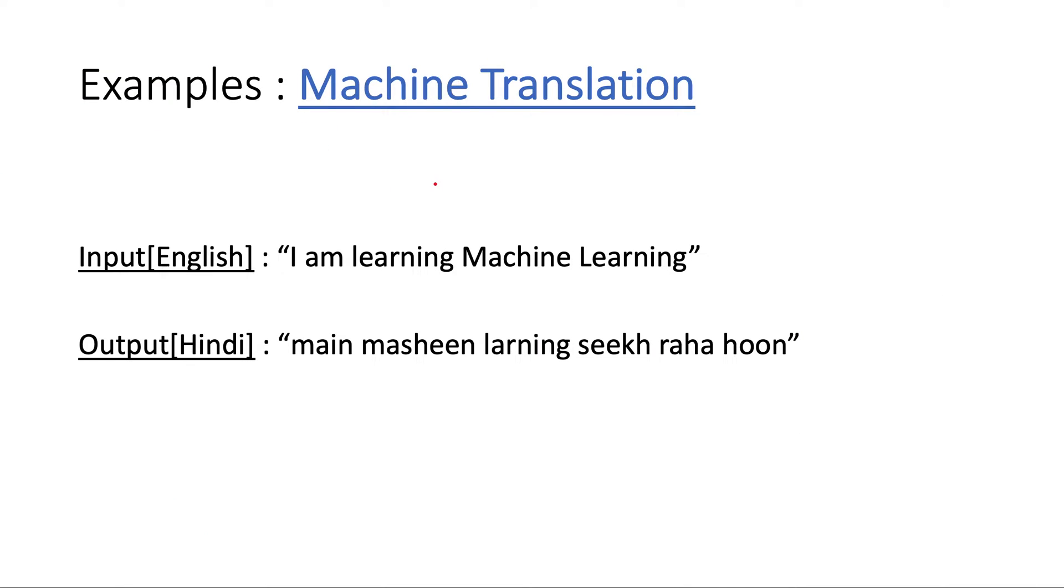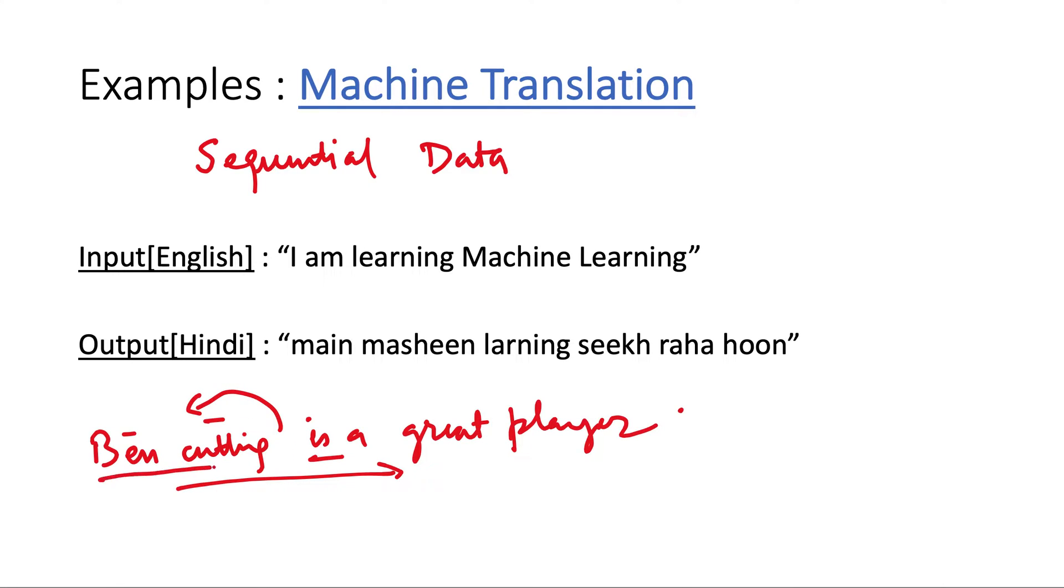Now let's see some motivating examples where it is used. It is very useful when we have sequential data, where there is some notion of sequence among the data. Like when we are speaking one sentence, the different words in a sentence are related. When we say 'Ben Cutting is a great player,' there is a flow, there is a grammar associated with this sentence. Each word is not independent of itself, so each is dependent on what came before it.